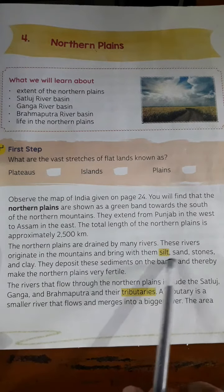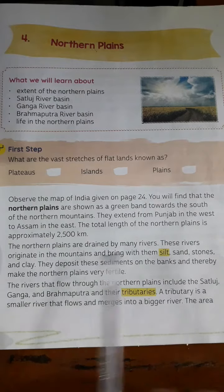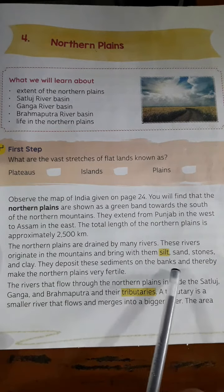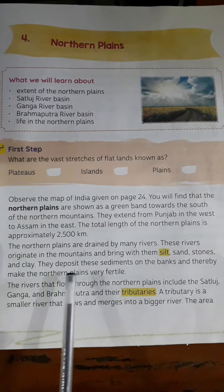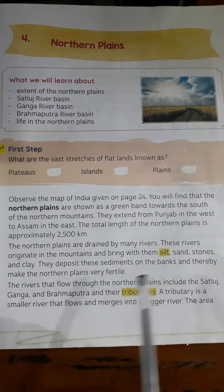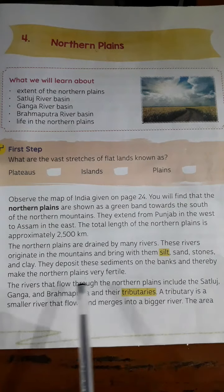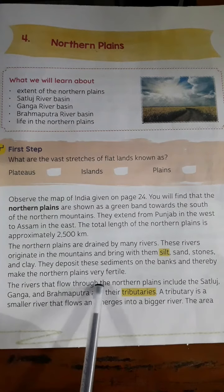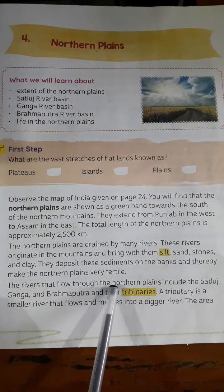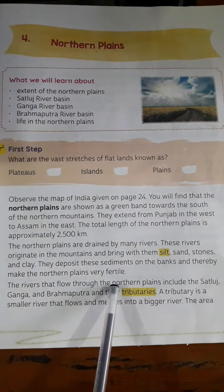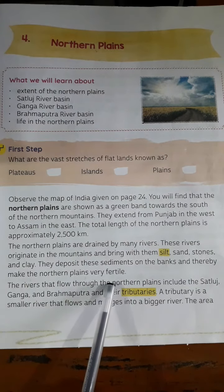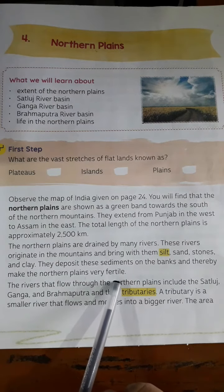All these materials — silt, sand, stones, and clay — are sediments deposited by many rivers, making the Northern Plains very fertile.